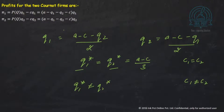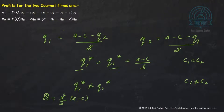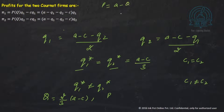Given A and C, you can figure out the production quantities. The total quantity the two firms together produce is two-thirds of (A minus C), meaning two-thirds of the market is served. One-third of the market remains unfulfilled, keeping P greater than C. If that one-third were also served, P would fall to equal C. When you substitute Q into P = A minus Q, the equilibrium price P star equals (A plus 2C) / 3.